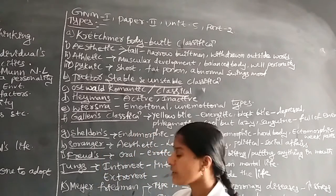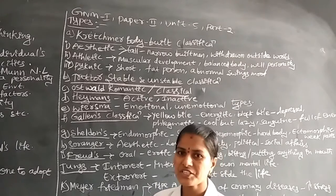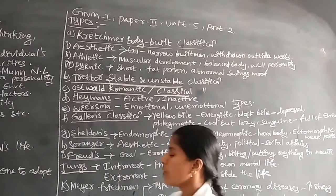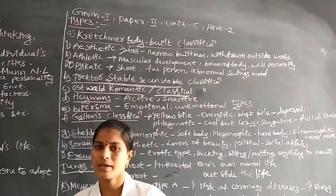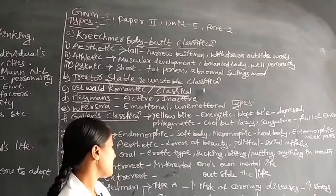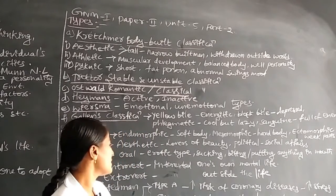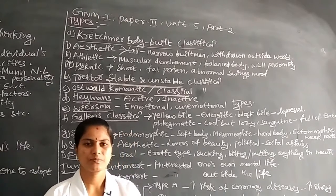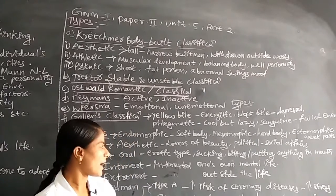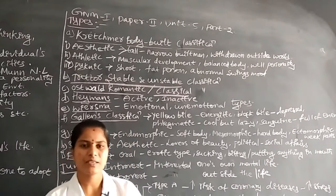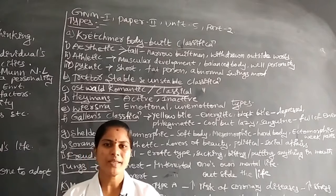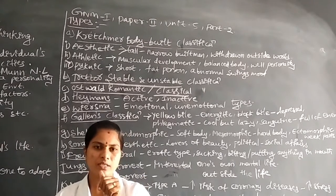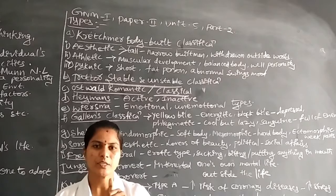Next is Freud's classification. In this, there is the oral erotic type. For example, in children there is one reflex — the sucking reflex. By putting the thumb finger into their mouth, children engage in sucking.